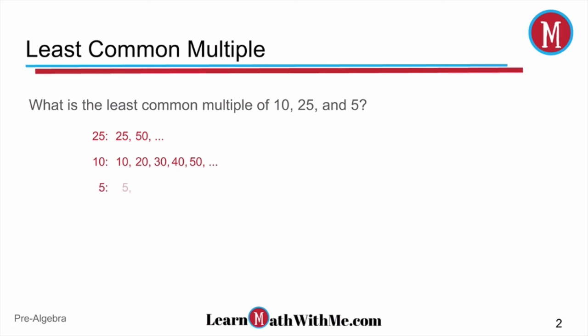And finally, we'll check 5 with 5, 10, 15, 20, 25, all the way up to 50. We find that the least common multiple is 50 in these three numbers.